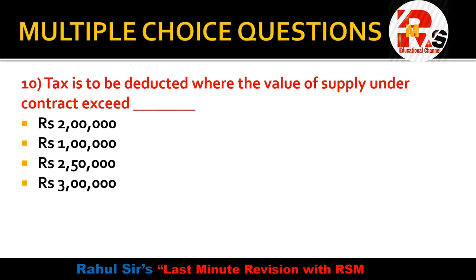Tax is to be deducted (TDS) where the value of supply under a contract exceeds — 2 lakhs, 1 lakh, 50,000, or 3 lakhs? This is an important MCQ. If the value of supply under a contract exceeds 2 lakh 25 thousand, then it becomes compulsory to deduct tax.